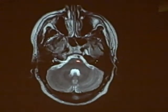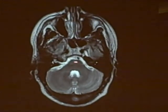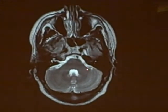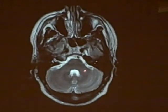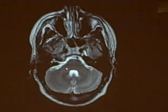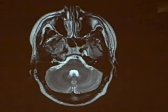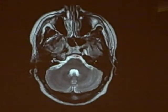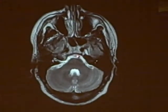We see the pons here, and the major connection between the pons and the cerebellum is the middle cerebellar peduncle. And the basilar artery is sitting right on top of the pons.